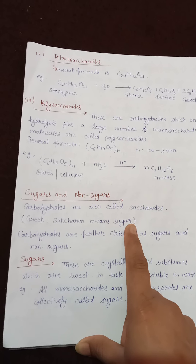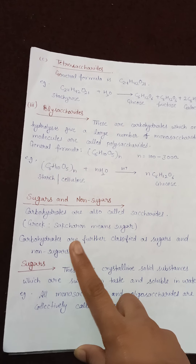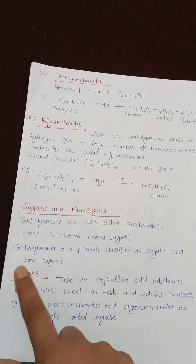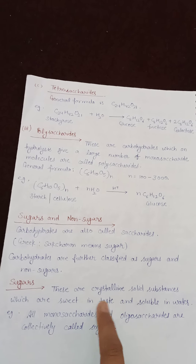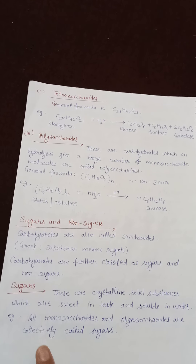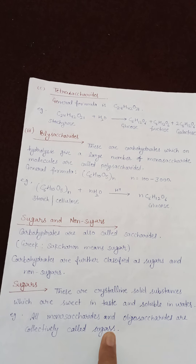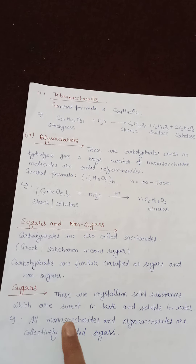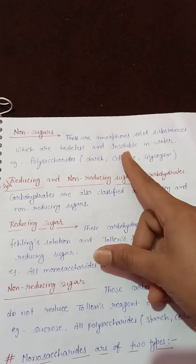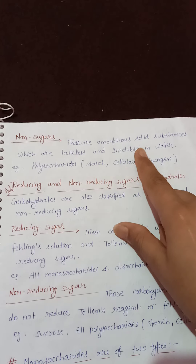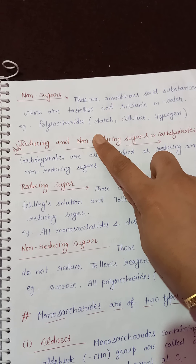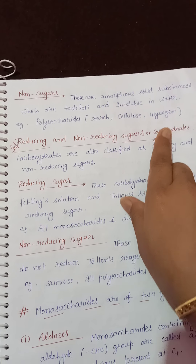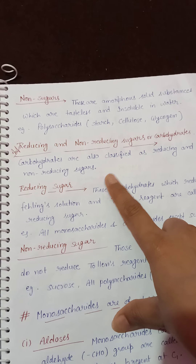Carbohydrates are also called saccharides (from the Greek 'sakcharon' meaning sugar) and are further classified as sugars and non-sugars. Sugars are crystalline solids, sweet in taste, and soluble in water — all monosaccharides and oligosaccharides are collectively called sugars (e.g., glucose, fructose, maltose). Non-sugars are amorphous solids, tasteless, and insoluble in water — all polysaccharides such as starch, cellulose, and glycogen fall into this category.